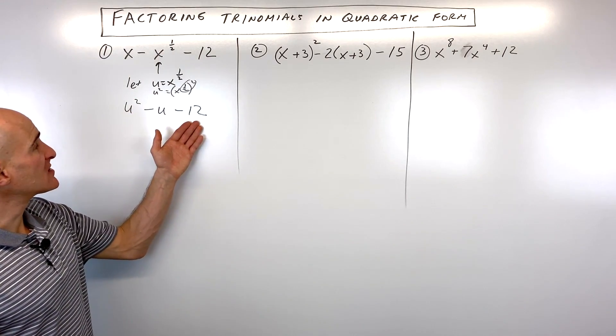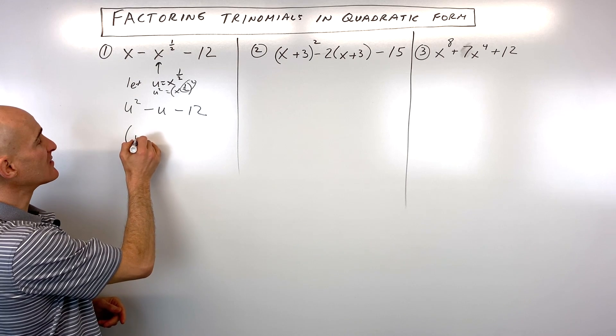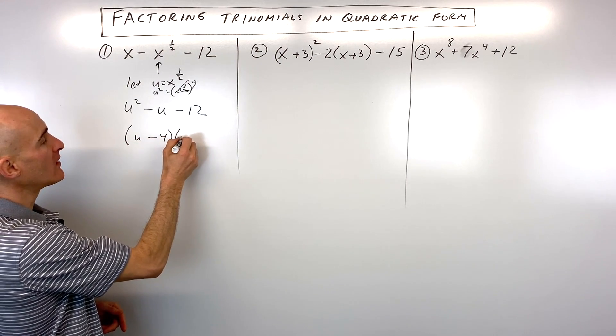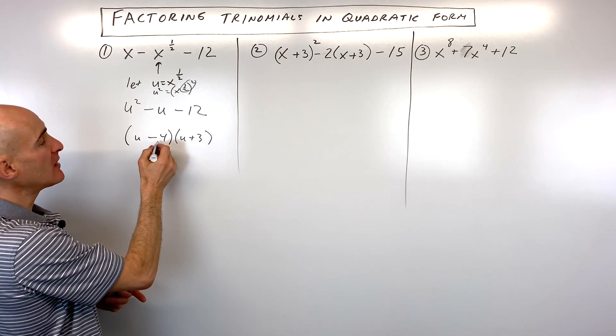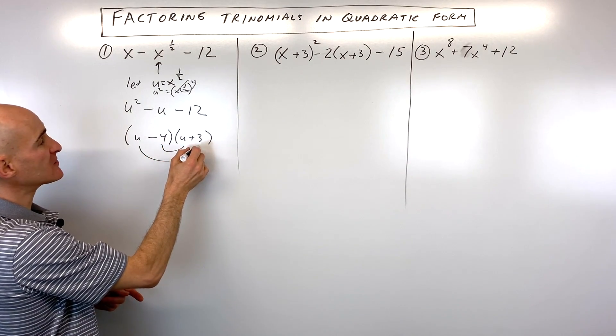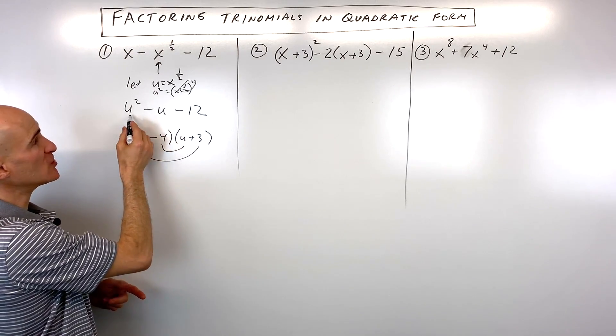So now when we look at this, it's much easier to recognize and much easier to factor. You can see that this is going to be u minus four times u plus three. Notice the negative four times positive three gives us negative twelve. The negative four u and the positive three u add up to the middle term negative one u, and then u times u is u squared.